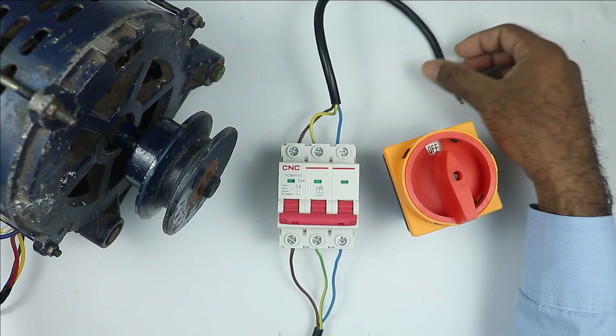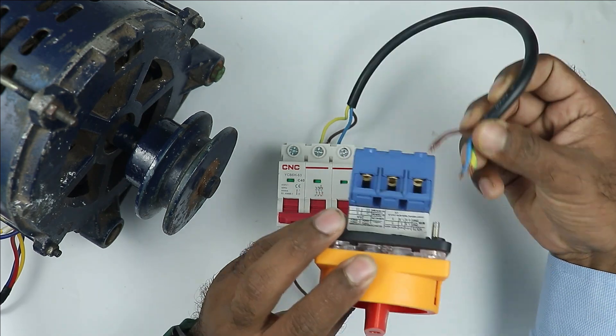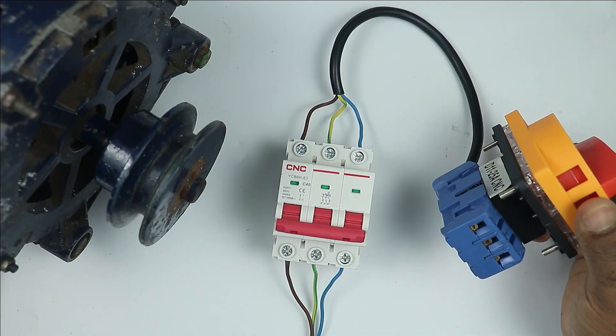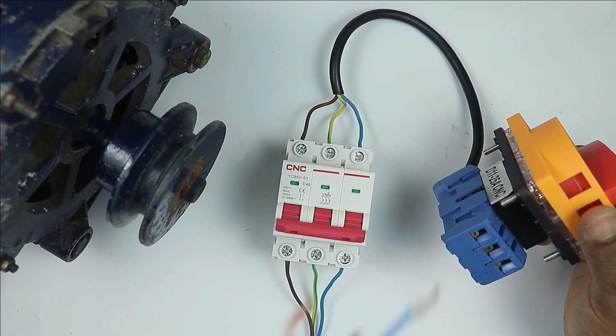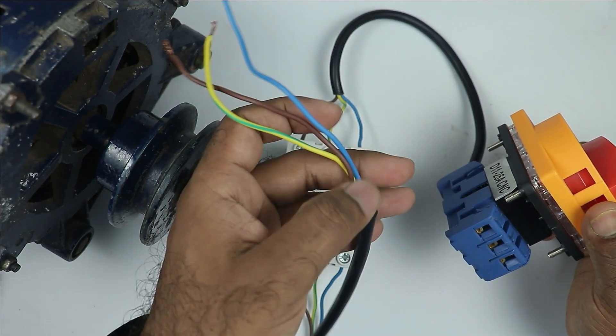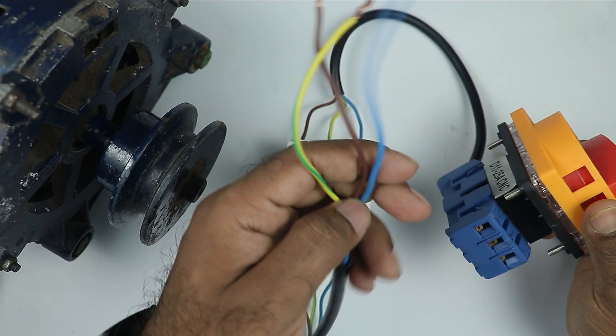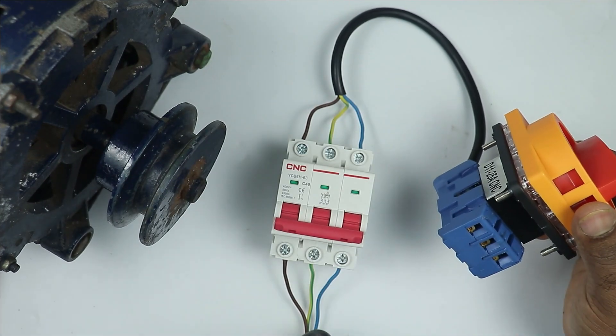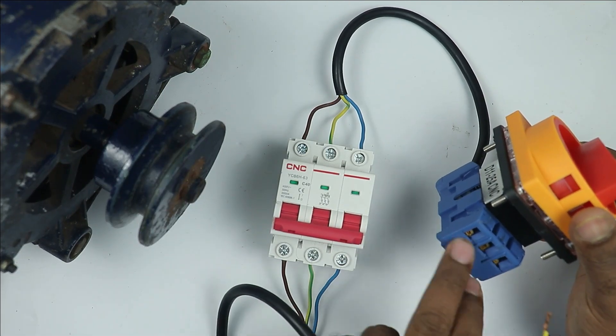Take other end of these wires and to this switch, we will connect all the wires in this way. Now at output terminal of rotary switch, we have to connect cable of motor. This motor cable contains 3 wires, so take all the wires and connect with these terminals.